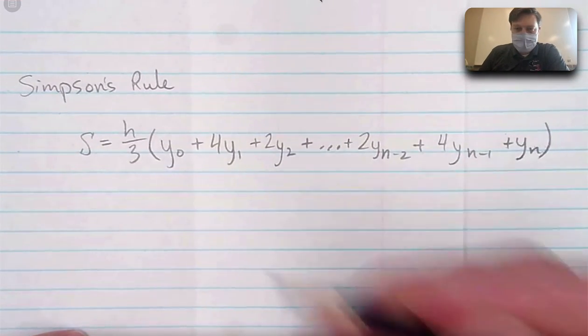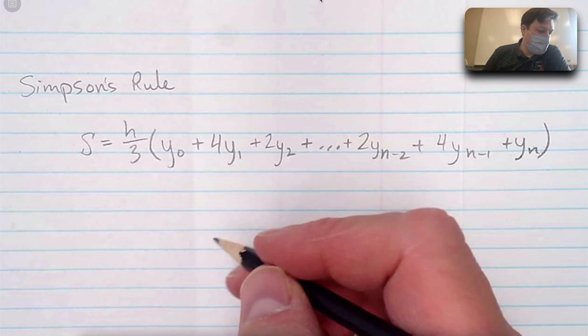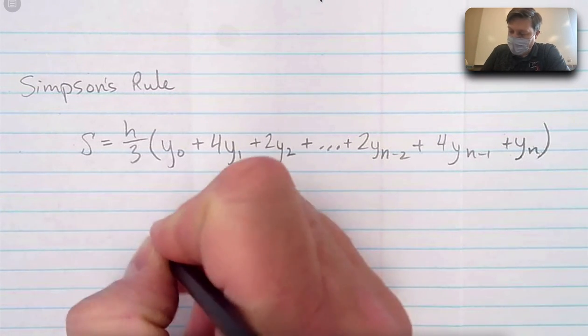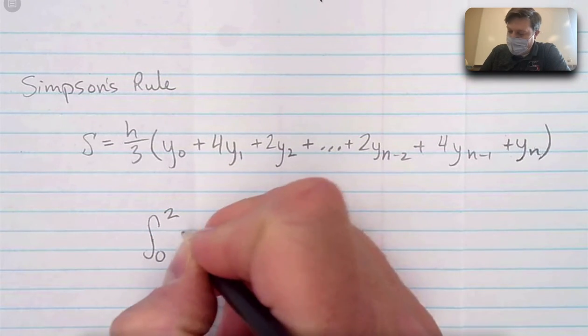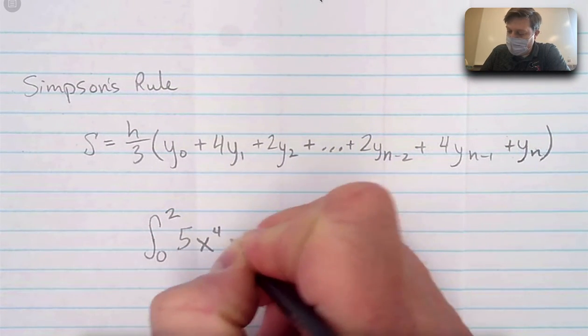In action, there's two things I probably should show with Simpson's rule. In action, let's try it with this one. Let's say from 0 to 2 of 5x to the 4th dx.